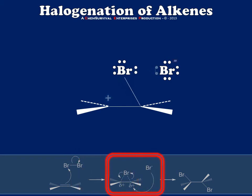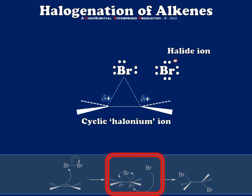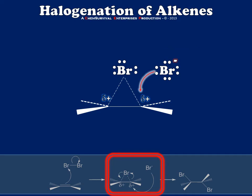When the alkene attacks, as you might expect, we generate a halide ion. But what you may not expect is that we don't generate a carbocation as I've shown you here. Instead, we generate something called a cyclic halonium ion, in which the bromine sits atop the carbon-carbon bond and distributes its bonding electrons among the three atoms in a cyclic structure like I've shown you here. The most important side effect of this is that our newly generated nucleophile, the bromide ion,